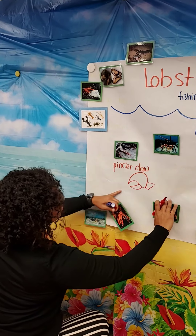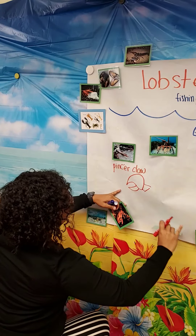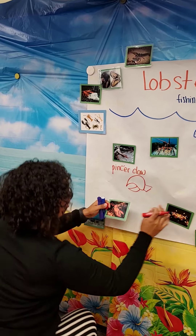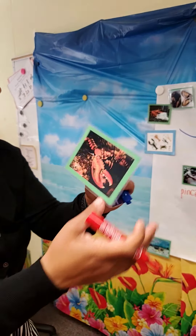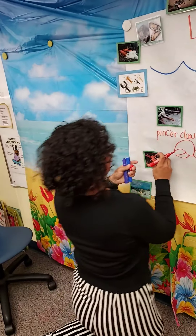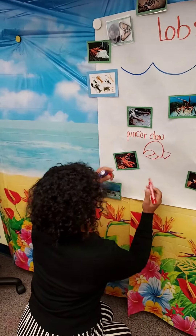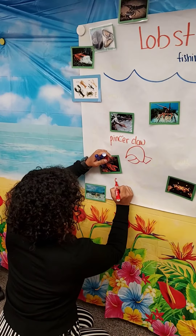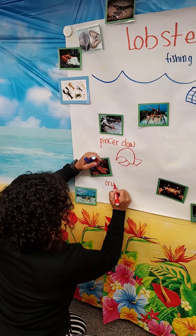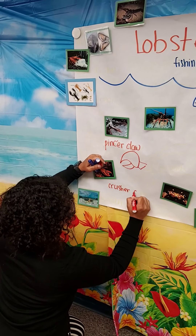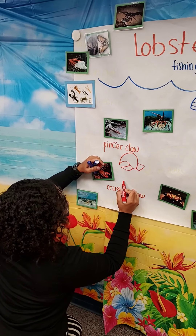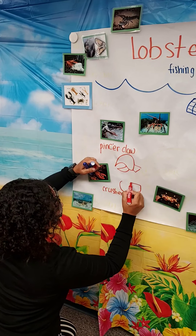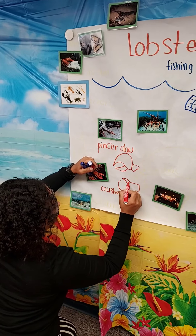The lobster also has something called a crusher claw. I'm going to draw the crusher claw.